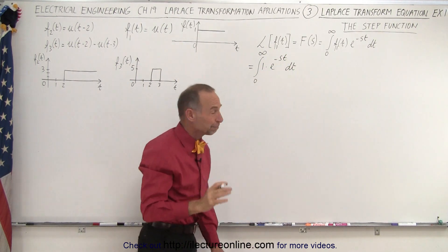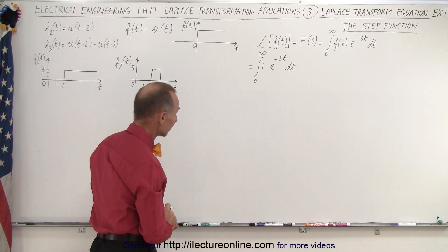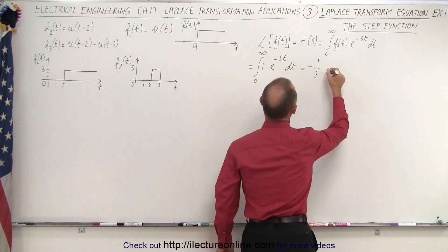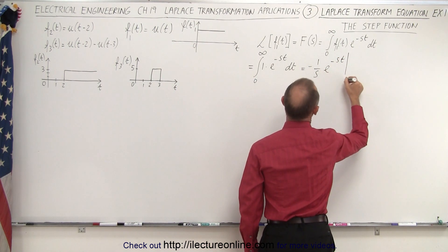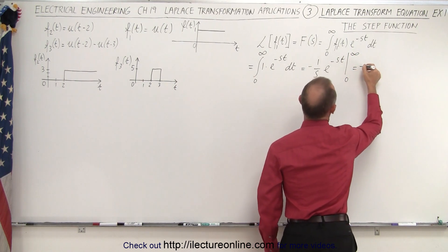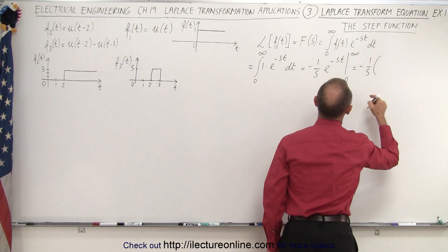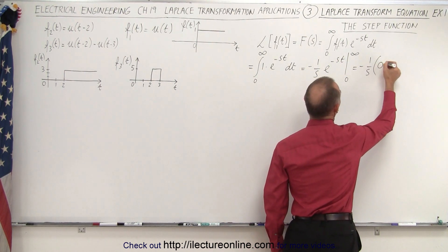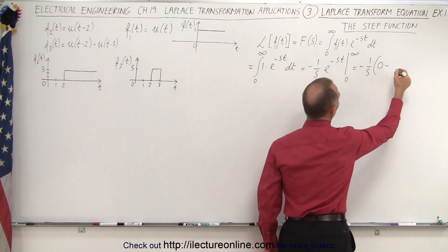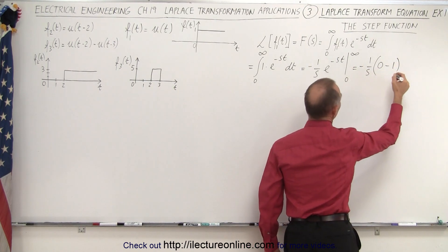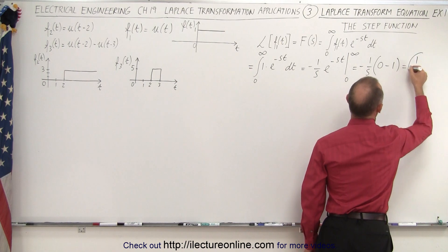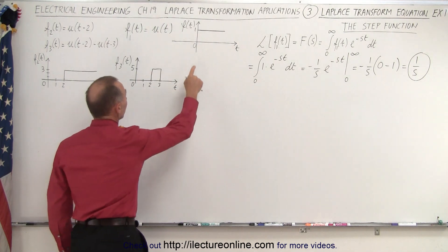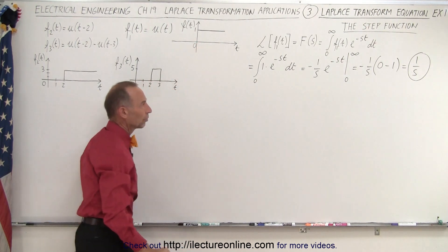We didn't have to write the one, but it's there for clarity. This is equal to minus one over s times e to the minus st, evaluated from zero to infinity, which equals minus one over s times — plugging in the upper limit, e to the minus infinity is zero, minus plugging in the lower limit, e to the zero is one. The negatives cancel and we get one over s, which is the Laplace transform of the step function with an amplitude of one starting at the origin.